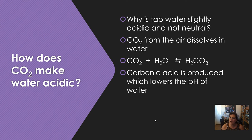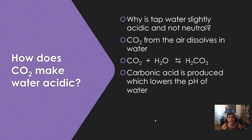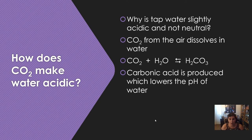So how does the greenhouse gas carbon dioxide, CO2, make water acidic anyway? Did you know tap water is actually a little bit acidic? It's not neutral, and that's just because all the CO2 in the air can dissolve a little bit in water. CO2 plus H2O makes H2CO3, which is carbonic acid. Carbonic acid then lowers the pH of the water — whether it's rainwater, lake water, or ocean water — making things more acidic.